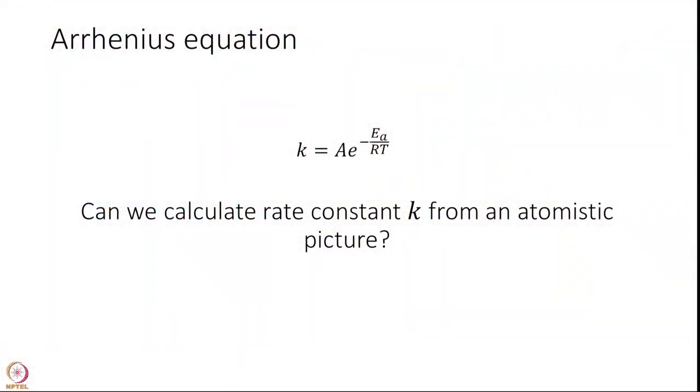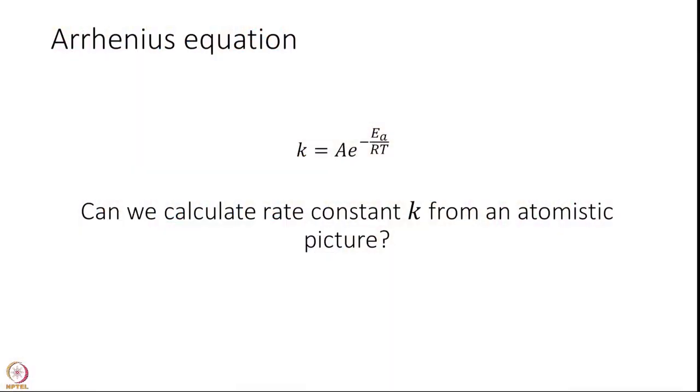Last module we ended with the most fundamental equation in Chemical Kinetics which is called the Arrhenius equation: K equals A into e to the power of Ea over RT. We motivated this equation via Vanthoff's analysis and ended with an analysis by Arrhenius on the physical interpretation of this equation. What we are going to focus from now on throughout this course is how do we calculate this K. If a new reaction is proposed to you, an experimentalist tells you that I want to do this reaction, what theories you can do to calculate this rate constant K.